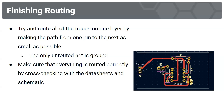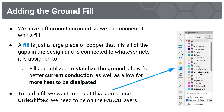For finishing routing, try to route all traces on one layer, making paths from pin to pin as short as possible. The only unrouted net should be ground. Cross-check everything with your datasheets and schematic.